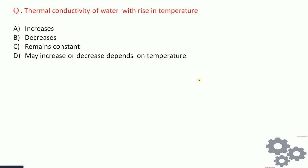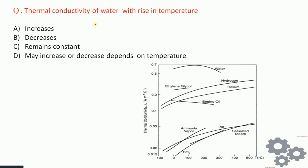First question: thermal conductivity of water with rise in temperature — increases, decreases, remains constant, or may increase or decrease depending on temperature? Looking at the graph plotting thermal conductivity against temperature, the thermal conductivity of water is decreasing with increase in temperature. Therefore the answer is: decreases with rise in temperature.